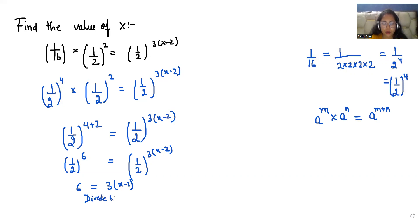6/6 = (3/6)(x-2). We can eliminate and simplify to get 1 = (1/2)(x-2).